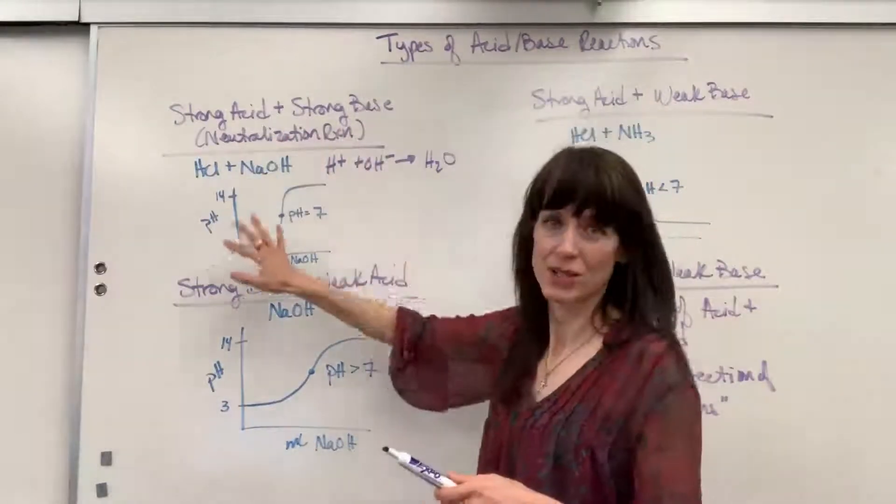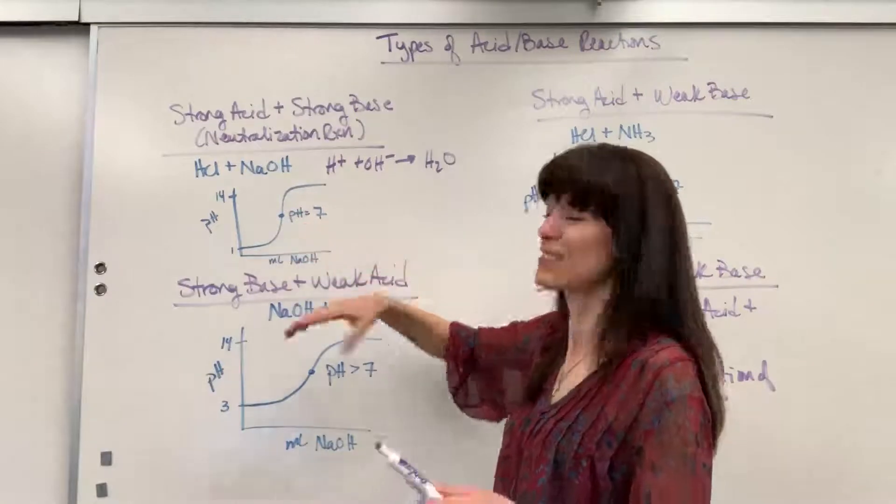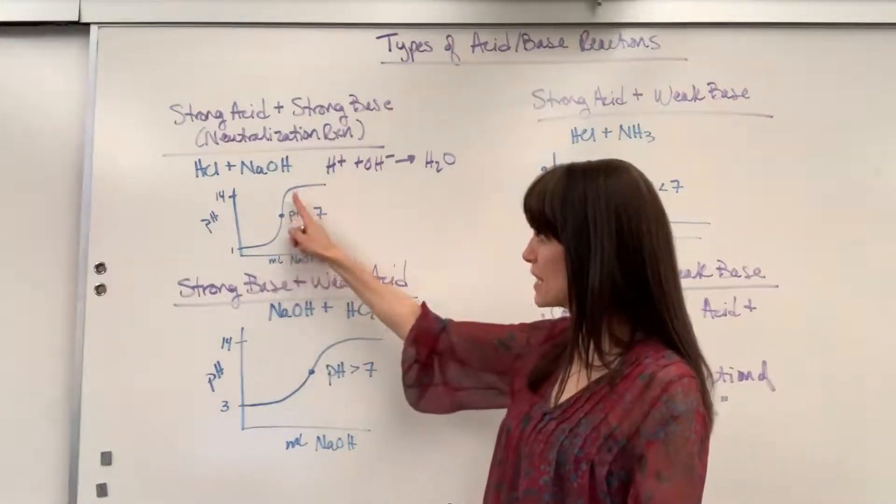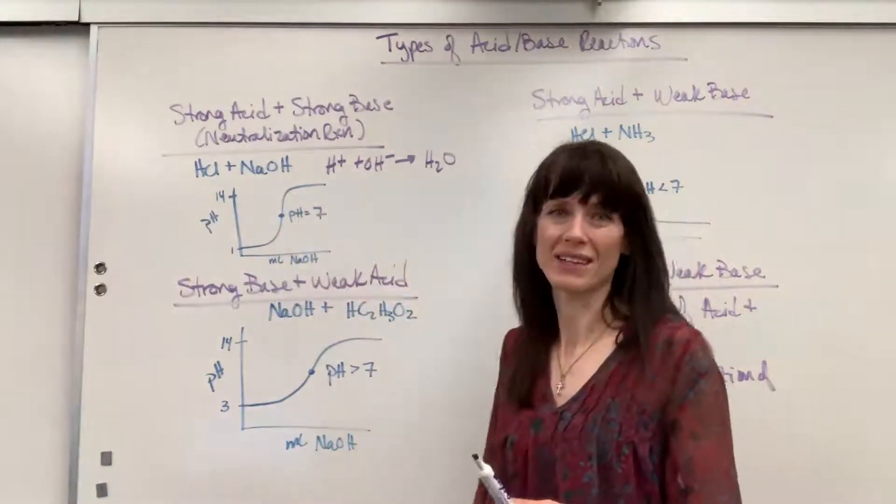Okay, so really special. Neutralization, strong acid, strong base. Equivalence point, pH equals 7. Classic curve, really flat at the bottom. Steep, steep, long slope. And then it goes flat at the top again.